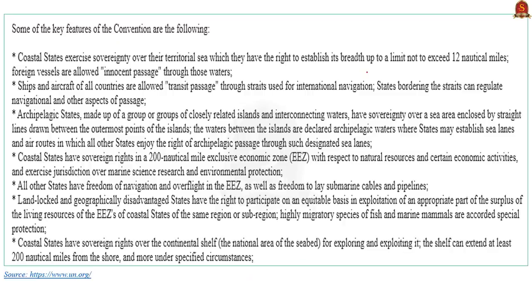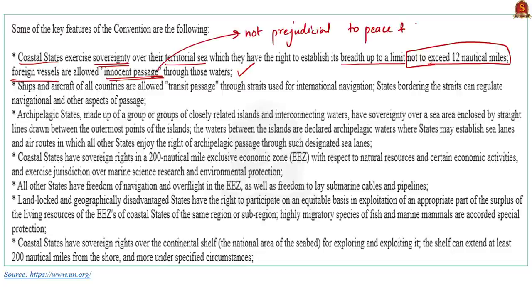Let us know about the purpose of UNCLOS. This convention lays down a comprehensive regime of law and order in the world's oceans and seas, thereby establishing rules governing all uses of the oceans and their resources. The convention says that the coastal states can exercise sovereignty over their territorial sea, and states have the right to establish its breadth up to the limit of 12 nautical miles from their territory. Through these waters, foreign vessels are allowed only for innocent passage — the passage is innocent so long as it is not prejudicial to the peace, good order or security of the coastal state.